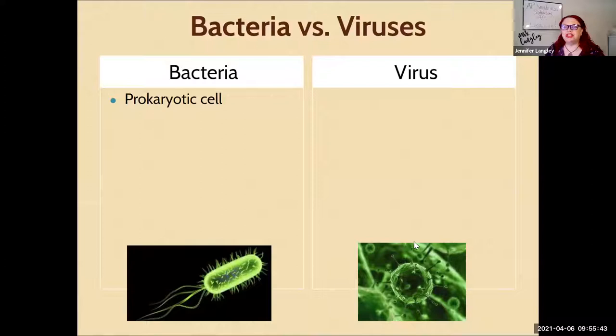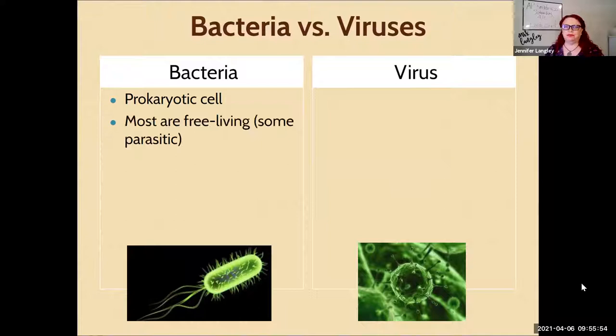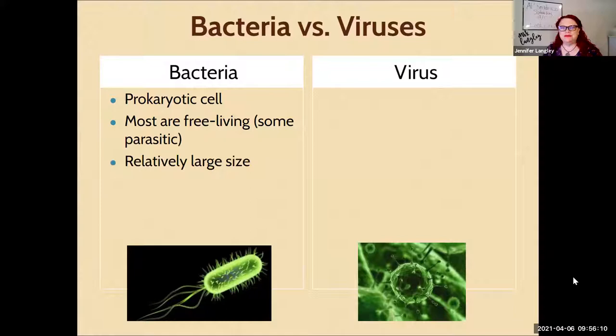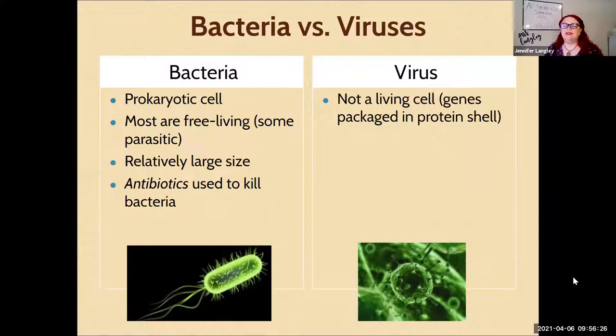Bacteria versus viruses. Bacteria are prokaryotic cells — they carry out all the hallmarks of life and meet the criteria for being a cell. Most bacteria are free-living and some are parasitic, meaning they need a host. They are relatively large in size, microscopically speaking. We use antibiotics to kill bacteria. A virus is not a living cell — it doesn't have ribosomes, cytoplasm, or all the things we associate with life.